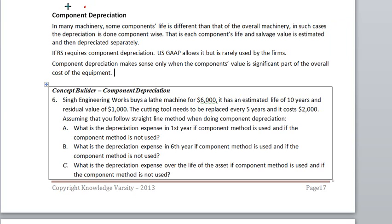What is component depreciation? Component depreciation is a useful method when you have a component whose life is much lesser than the overall asset's life. As an example, think about a car — if the car's life is 10 years, the tire would have to be replaced every three years or so. If the tire cost is very high as a percentage of the total vehicle cost, it is a better idea to depreciate the tire separately and depreciate the car separately.